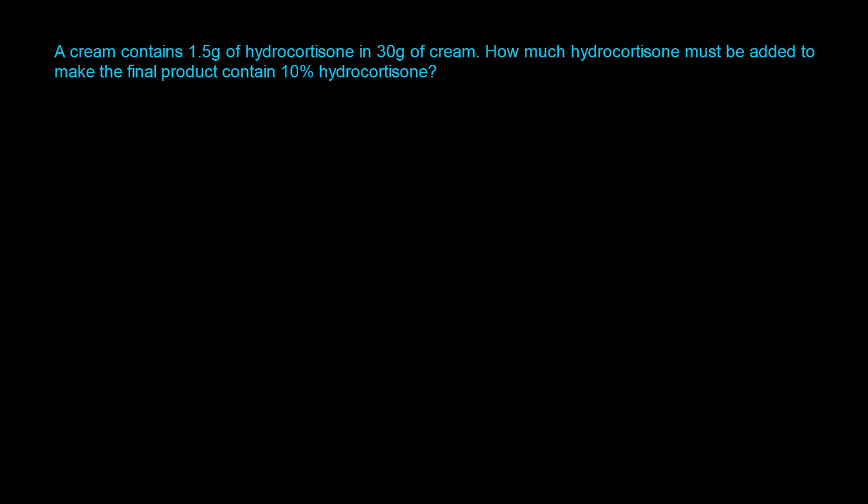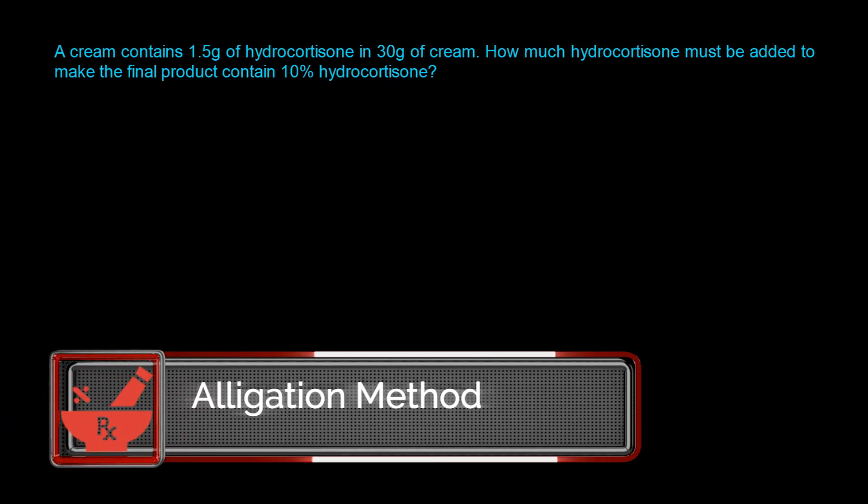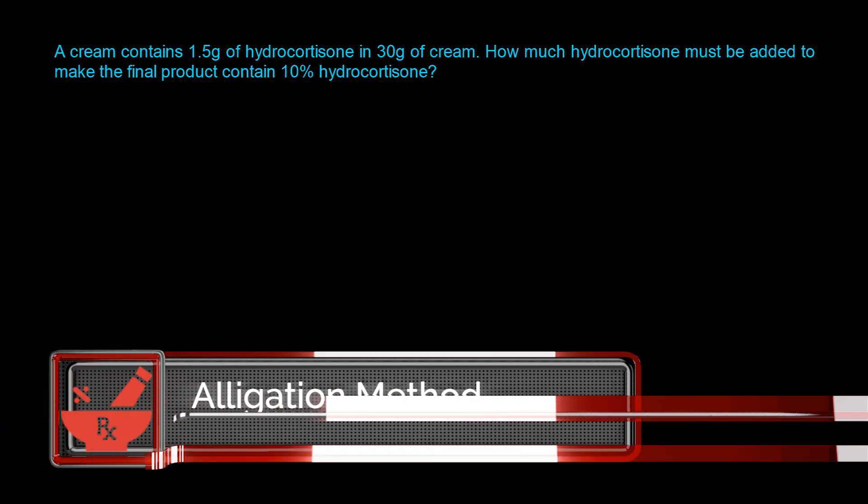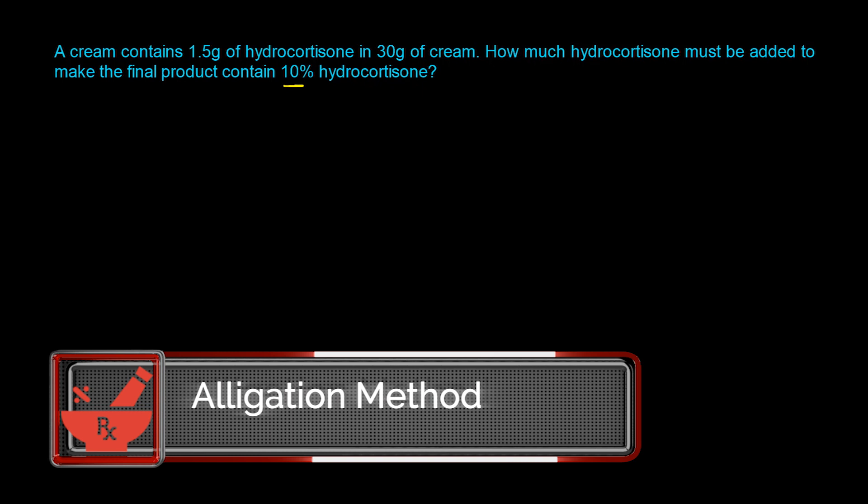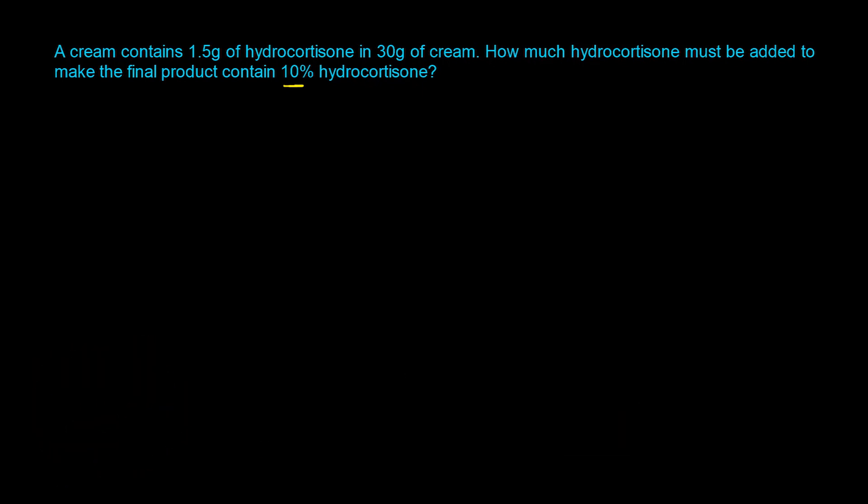There are two ways you can solve this question and I'm going to show you both approaches. The first approach is to use the allegation method. Because our desired concentration is 10% and it's giving us a percentage strength, we want to determine the concentration of the hydrocortisone and express the amount in the 30 gram cream as a percentage strength.